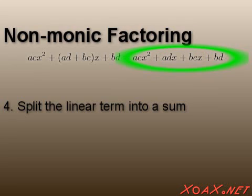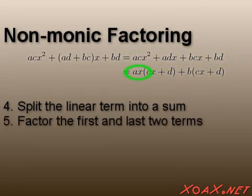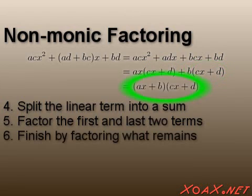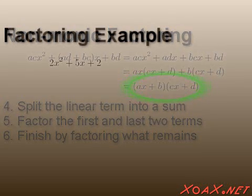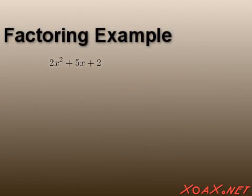Our polynomial becomes ac x squared plus adx plus bcx plus bd. Then we can factor out ax from the first two terms, and b from the last two terms, to get ax times the quantity cx plus d plus b times the quantity cx plus d. Notice that we now have a cx plus d term that we can factor out to get our final factorization, ax plus b times cx plus d. Let's go back to our polynomial and apply this method.